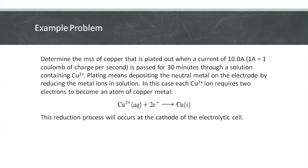Plating means depositing the neutral metal on the electrode by reducing the metal ions in solution. In this case, each Cu2+ ion requires two electrons to become an atom of copper metal: Cu2+(aq) + 2e- → Cu(s). This reduction process will occur at the cathode of the electrolytic cell.